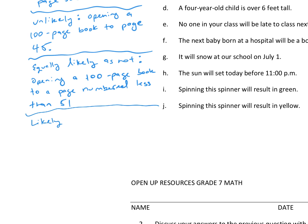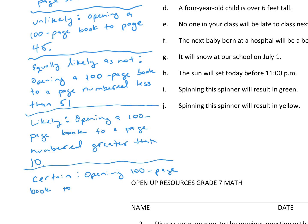Likely would be opening a 100-page book to a page number greater than 10. And then certain would be opening a 100-page book to a page numbered less than 101.